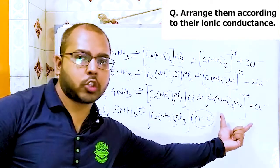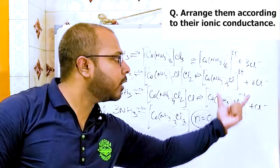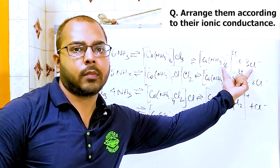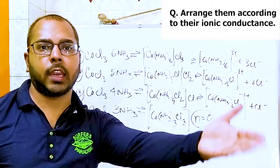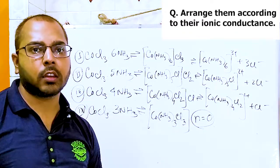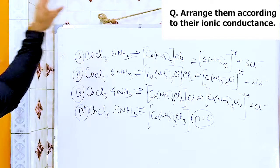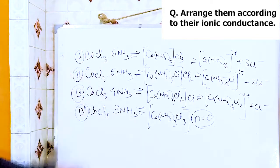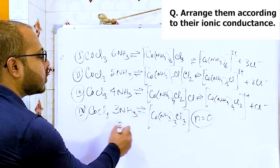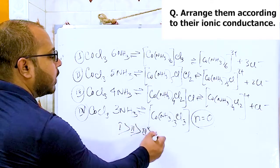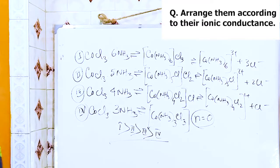So the number of ions: compound 1 gives 4, compound 2 gives 3, compound 3 gives 2, and compound 4 gives 0. The conductivity order is: 1 > 2 > 3 > 4.